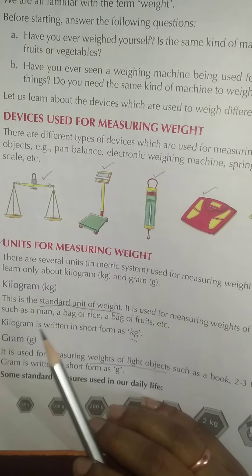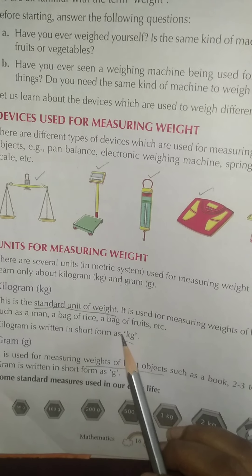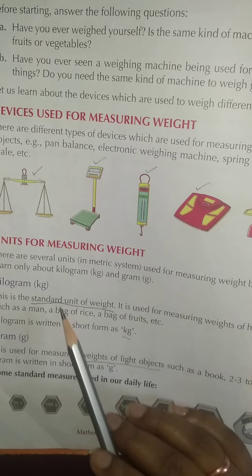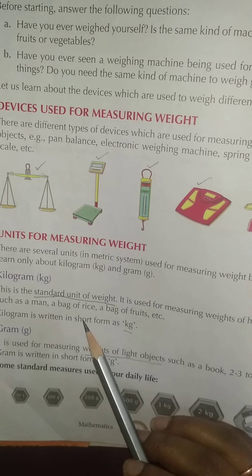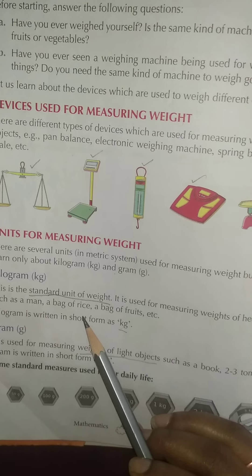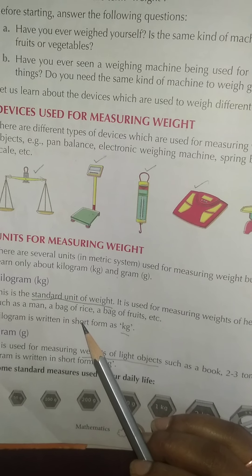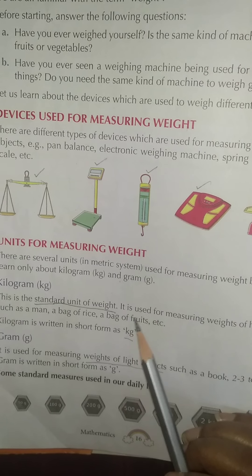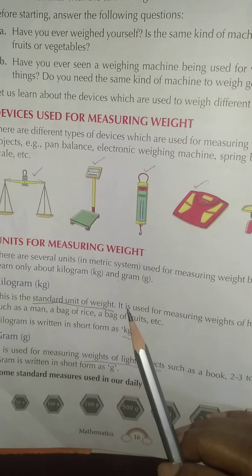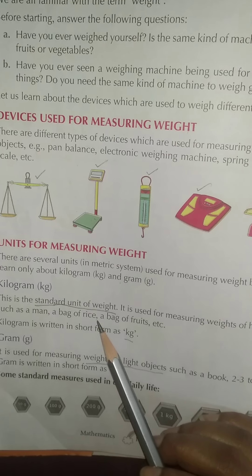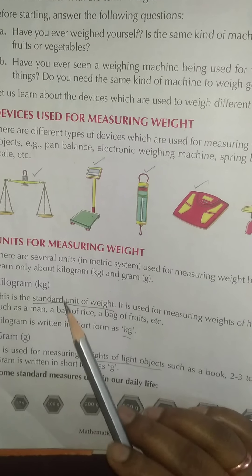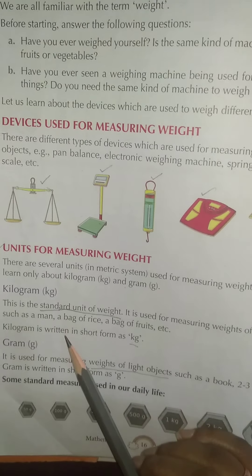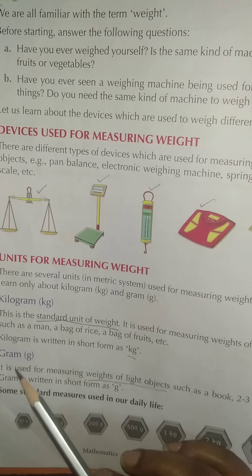Kilogram is written as kg. It is the standard unit of weight, used for measuring heavier objects such as a man, a bag of rice, or a bag of fruits. The weight of a person, a bag of rice, or a bag of fruits — these things are measured in kilograms.